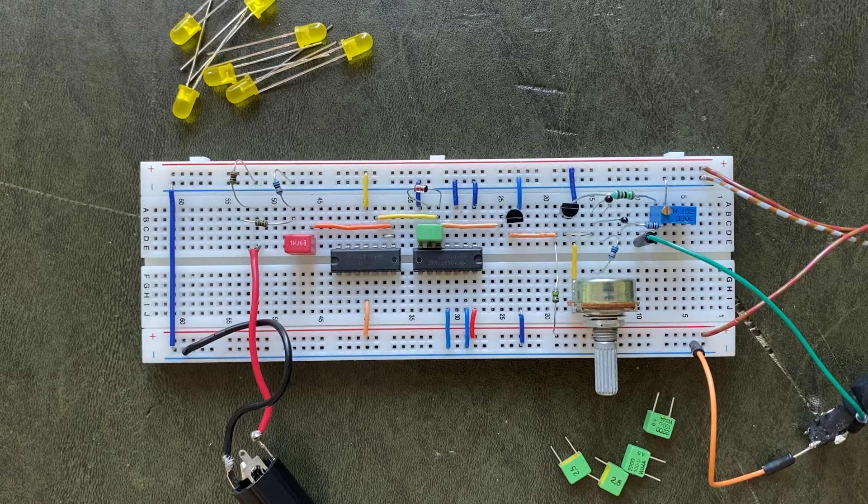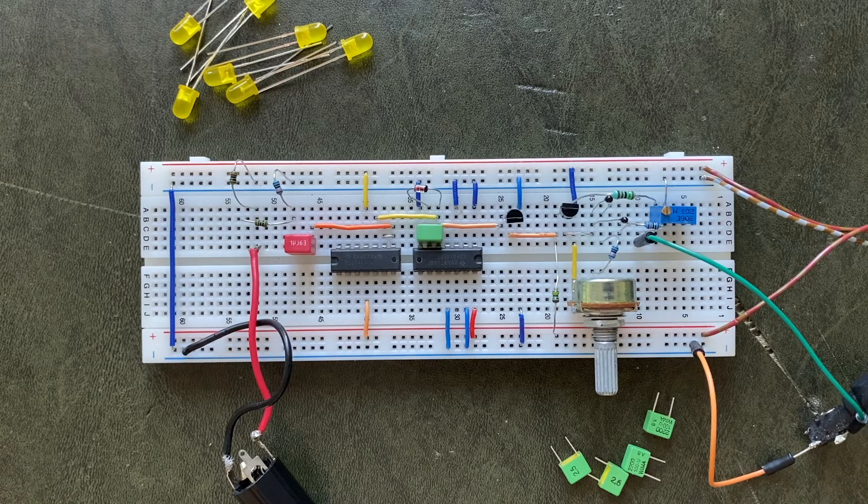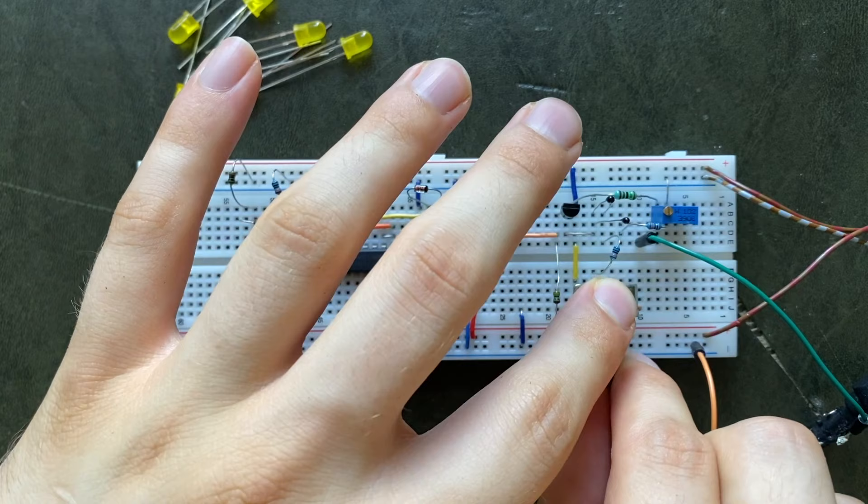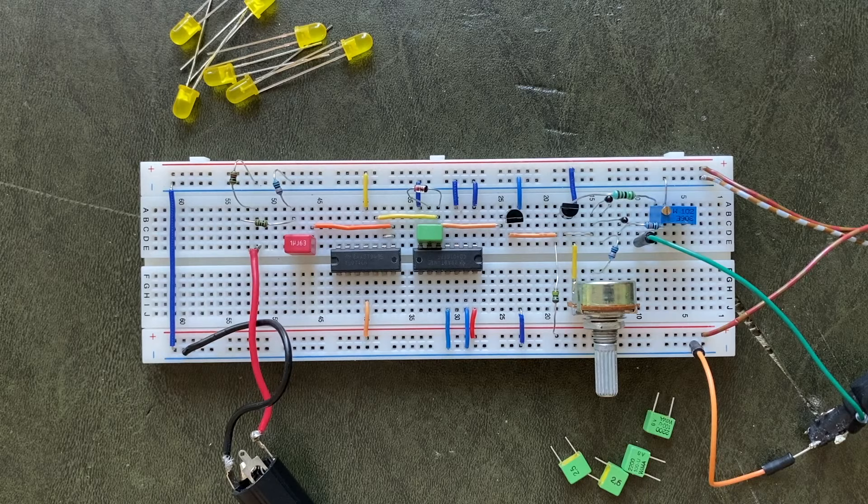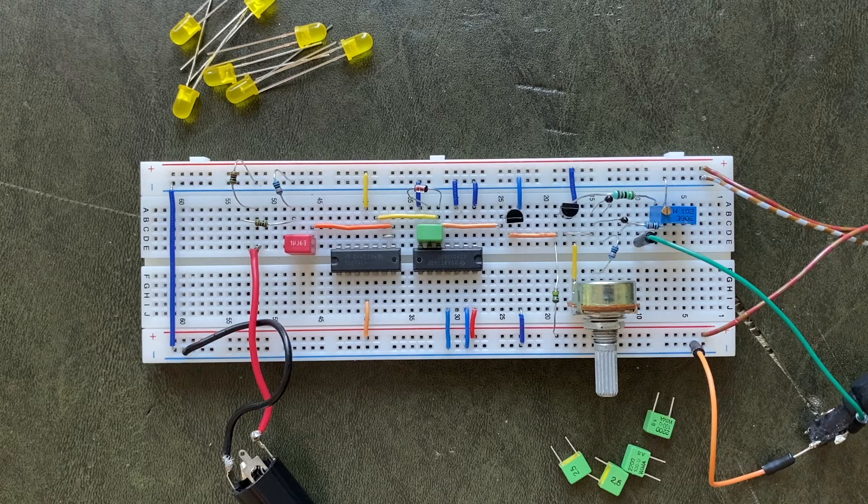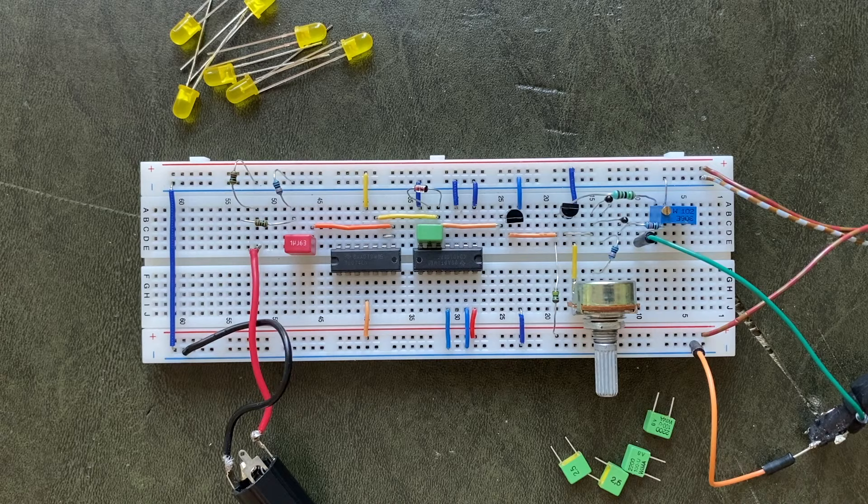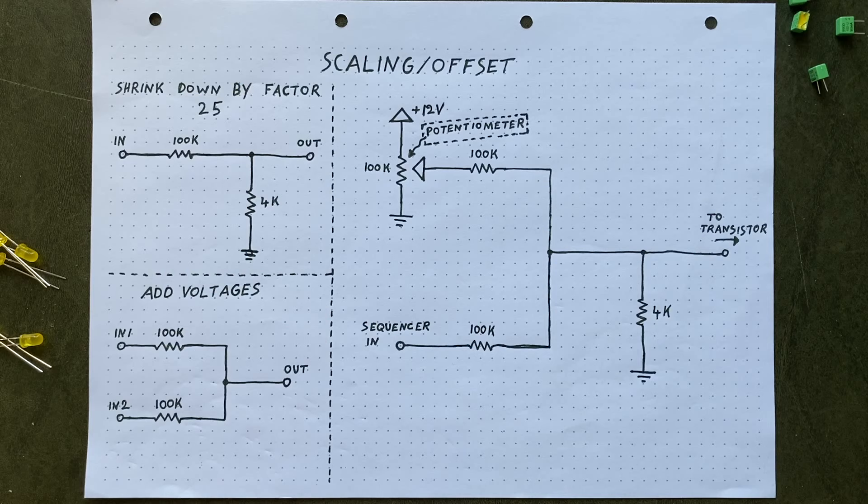Up until now, we only had what you would call a coarse tuning potentiometer. Where a small turn will result in a big change in bass frequency. Most VCOs offer an additional fine tuning pot though. And for good reason. It allows for a much more precise adjustment of the bass frequency. This not only helps with tuning the VCO, it also makes it much easier to slightly detune it against other VCOs.